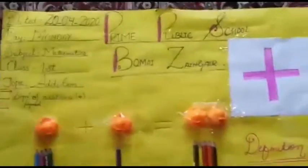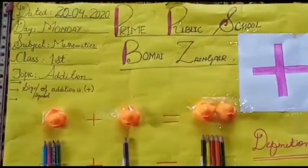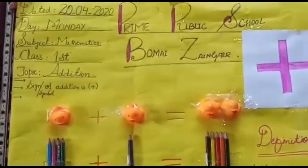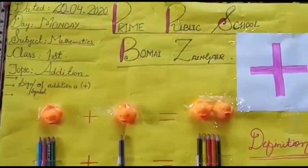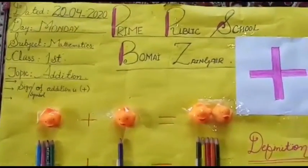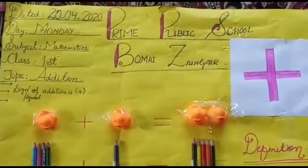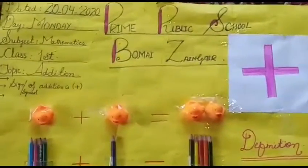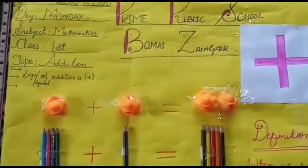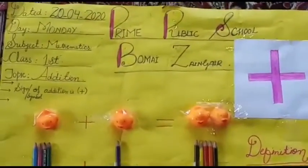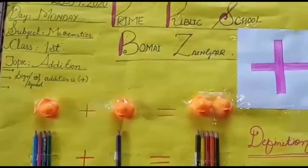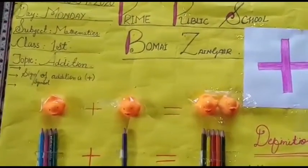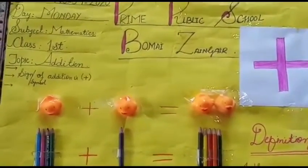Hello children, I am Maury Fahmayam from Prime Public School, Bumaj Zangir. Welcome you all with Islamic greetings. Assalamualaikum warahmatullahi wabarakatuh. It gives me immense pleasure to see you again in the very first lecture of Mathematics of class first. And today our topic is Addition.